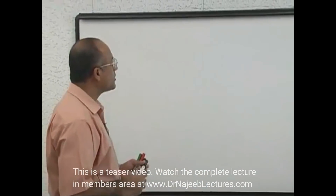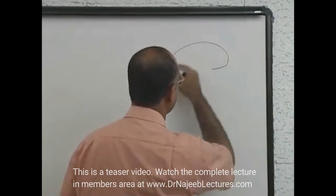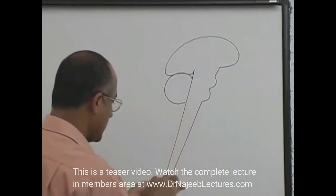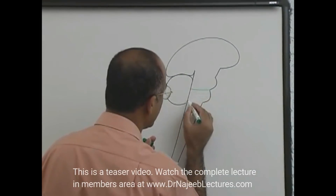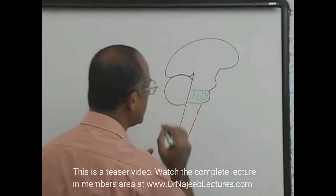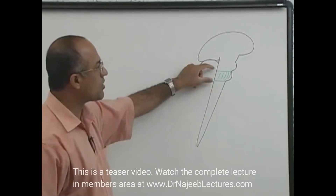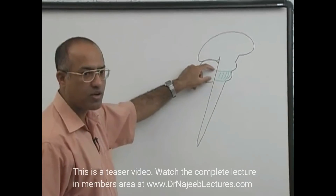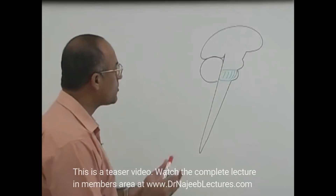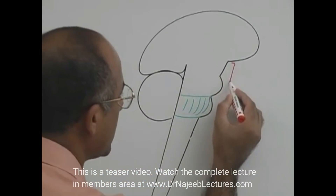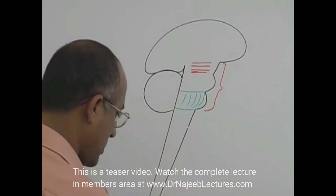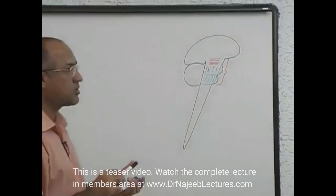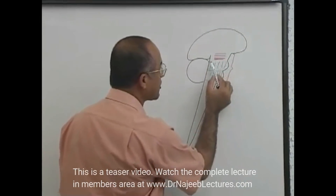Now we will talk about the medulla. You already know where exactly the medulla is present in the central nervous system. The medulla is part of the brainstem — here is your medulla. The medulla is basically the lower part of the brainstem. When we talk about the brainstem, what are the three structures? The three structures of the brainstem are midbrain, pons, and medulla.